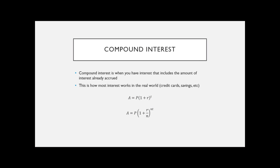We've got two variations on the equation. The first one is A, which stands for the amount. A is the amount, P is the principal, and then we've got one plus R — because you're adding interest — and R is the annual interest rate. So you're usually given the annual interest rate, but if you have interest compounded monthly it's different and you have to take that into account. This first equation is for the annual interest rate, and T is how many years you're getting interest.